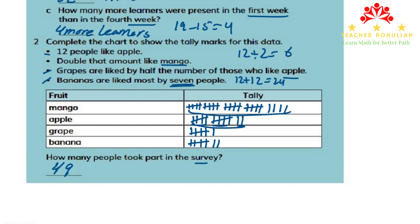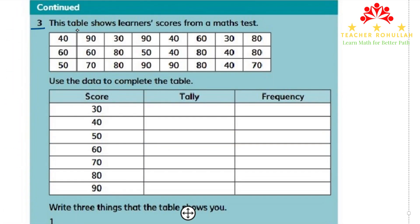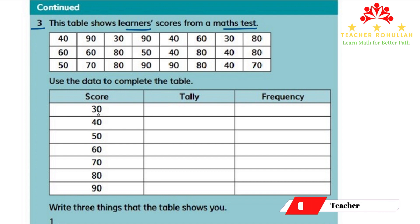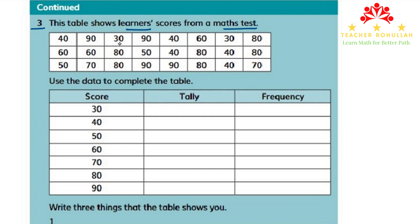We are done with question 2. Let's scroll down to question 3. This table shows learners' scores for a math test, and we are asked to use the data to complete the table. In the first column we have scores from 30 to 90. In the second column we use tally marks to record the data. In the third column we have frequency, showing how many of the scores occurred. I will record each one by one — that is the usefulness of tally marks.